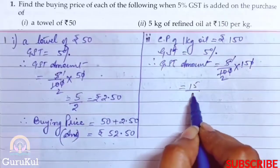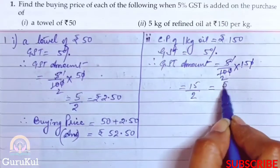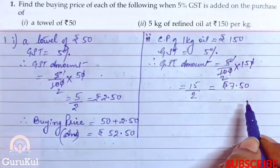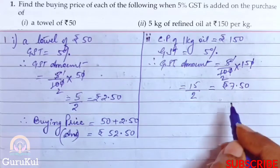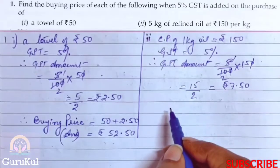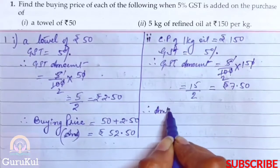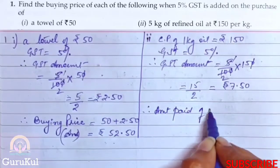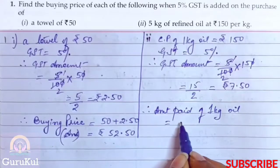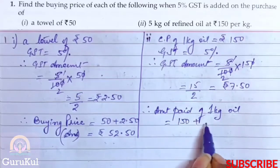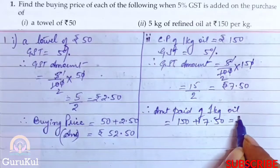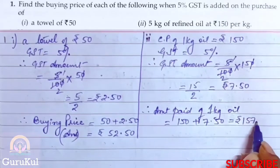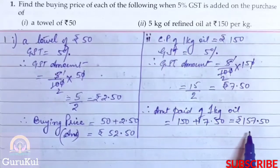GST amount is 5% of ₹150 = ₹15/2 = ₹7.50. This is the GST amount. Therefore the amount paid for 1 kg of oil is ₹150 + ₹7.50 = ₹157.50.